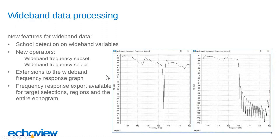Moving on, we'll look at some wideband data processing features added in EchoView 9. EchoView 9 includes schools detection on wideband variables, meaning that when you view a wideband SV echogram, you can now go to the echogram menu and select detect schools. The algorithm and the way to use it is exactly the same as for older narrowband data like EK60 and other formats — nothing new in terms of the algorithm, it's just now available if your data type is wideband.